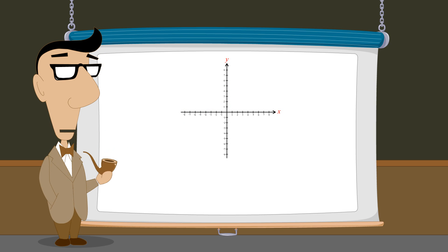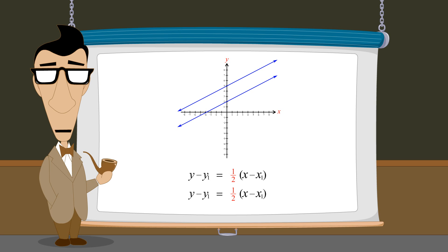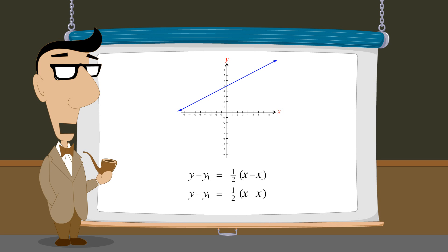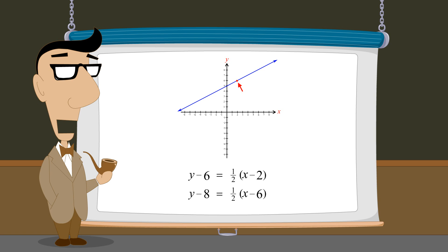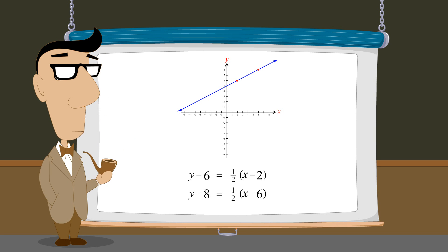On the other hand, two equations written in point-slope form which have the same value for the slope m may describe parallel lines or they may both describe the same line, even when the two equations contain different values for x1 and y1. This is because the points represented by x1 and y1 in each equation may fall on the same line. In that case, even though both equations look different, they actually describe the same line.